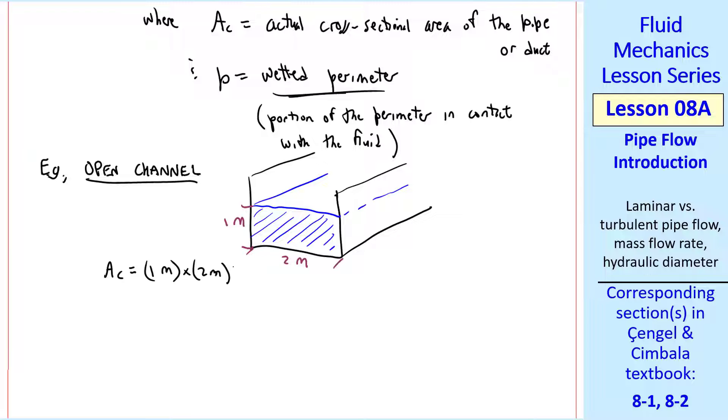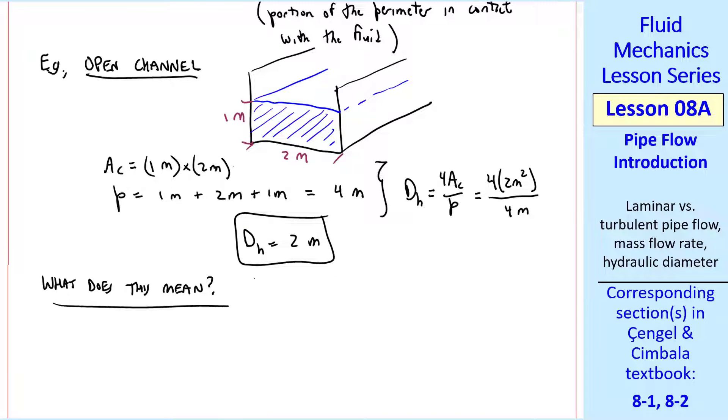In this case, the cross-sectional area is 1 meter times 2 meter. This is that portion of the area that is filled by the liquid. And P would be 1 meter plus 2 meter plus another meter here, which equals 4 meters. So DH would be 4 AC over P, or 4 times 2 square meters over 4 meters. So the hydraulic diameter is 2 meters in this example.